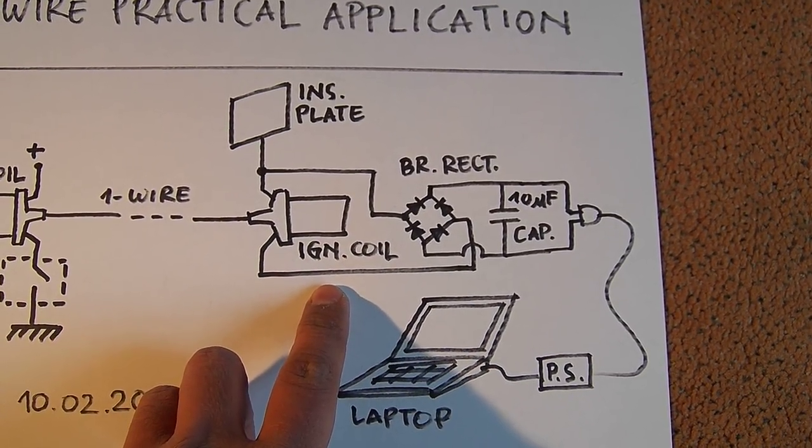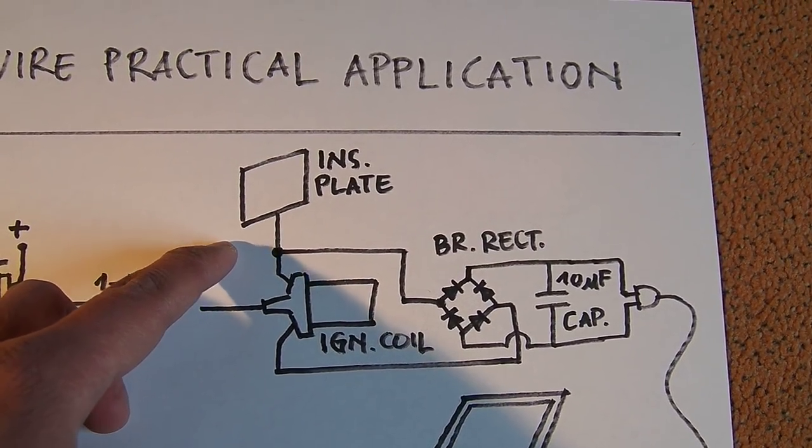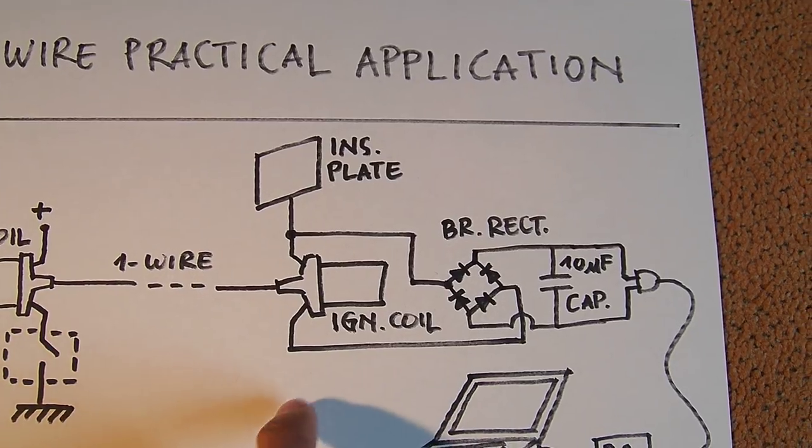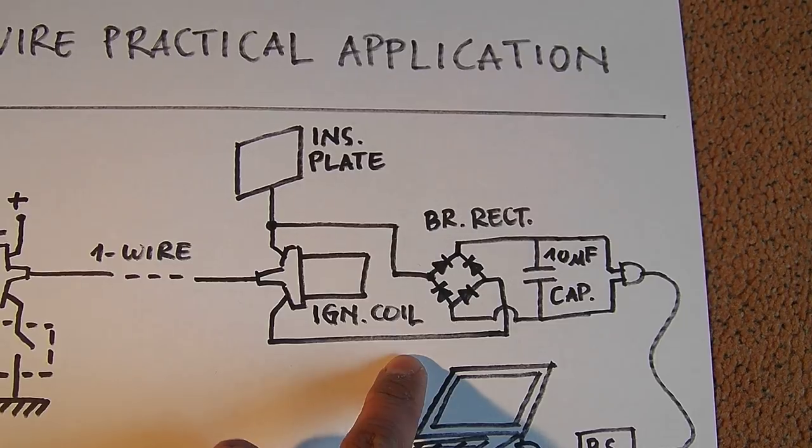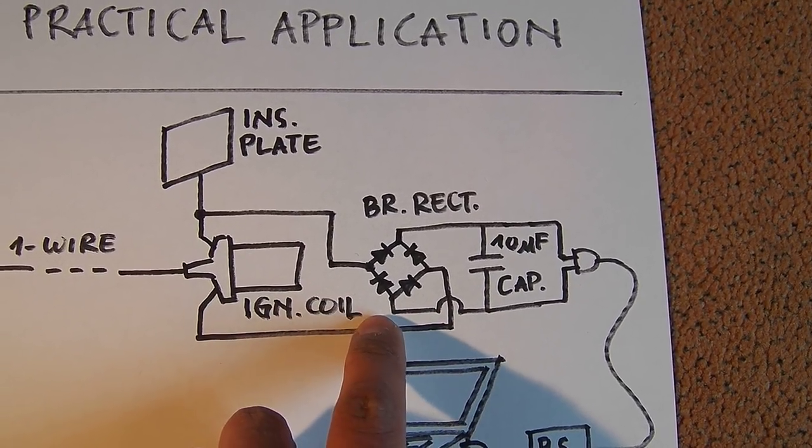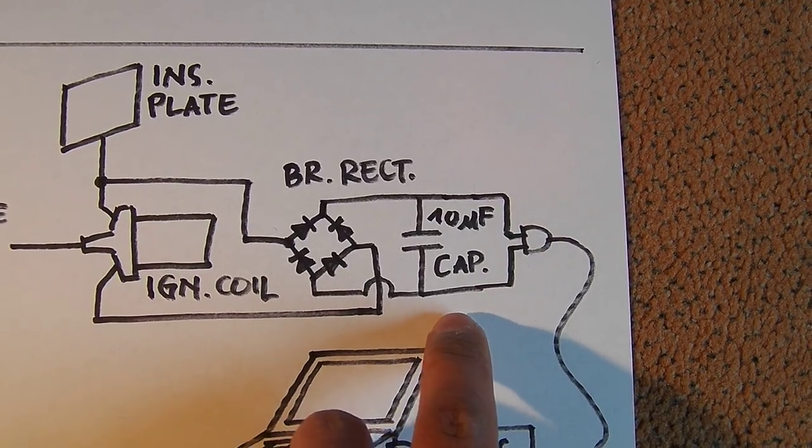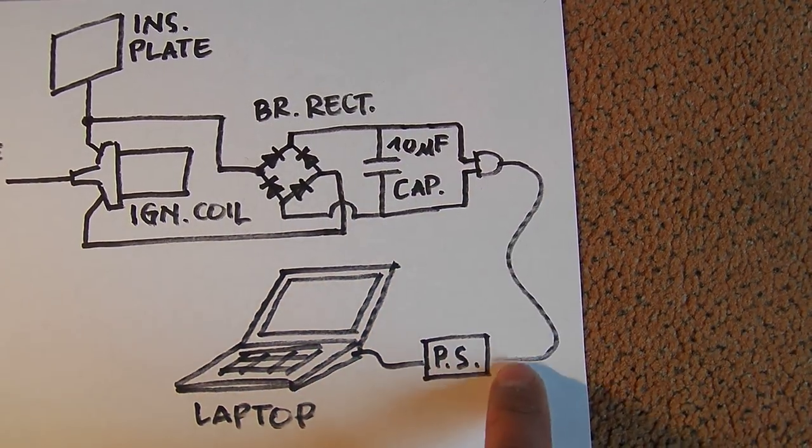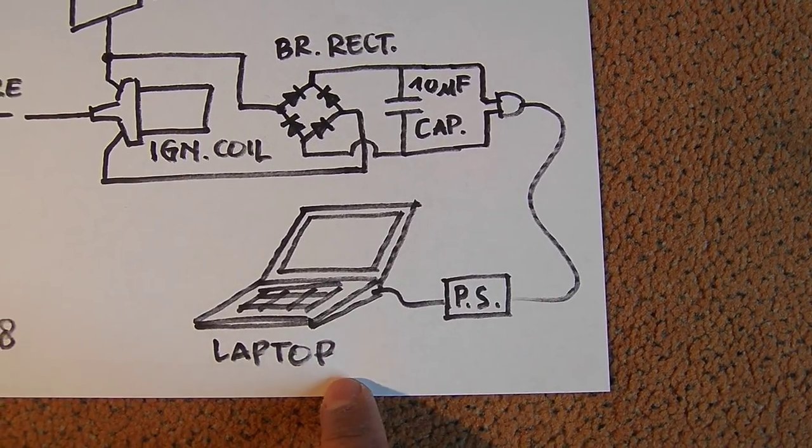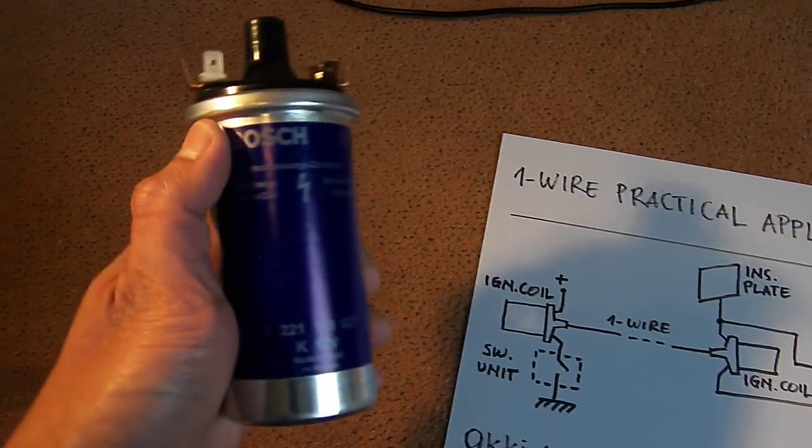On the receiver side I have an ignition coil and one of the terminals will be connected to an insulated plate hanging in the air. Both terminals are connected to a bridge rectifier and on the DC side I have a 10 microfarad capacitor. Then I have a laptop power supply and we will see if we can power a laptop with this system or not.